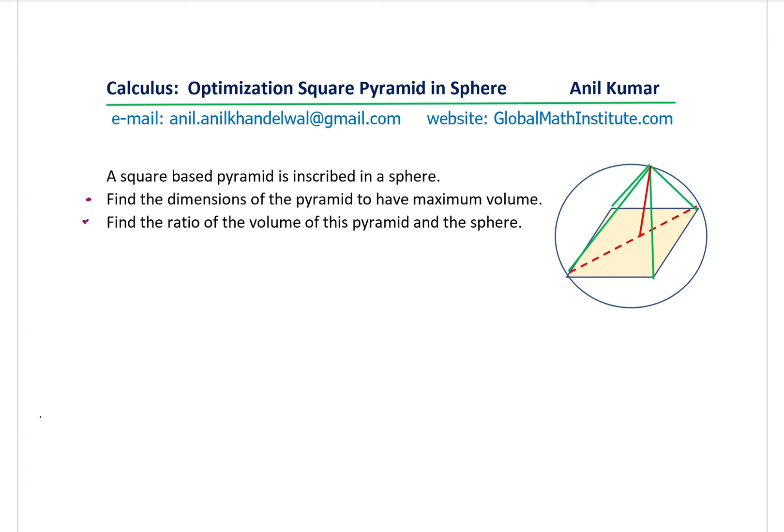We have a square-based pyramid inscribed within a sphere. You can always pause the video, answer the question, and then look into my suggestions. Let's begin with sketching a two-dimensional equivalent of the given situation. I will inscribe the pyramid within a sphere and take a two-dimensional view — that is, we will have a circle, and within the circle, we can have a triangle to represent the pyramid.